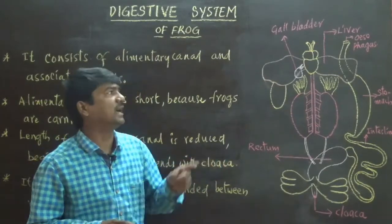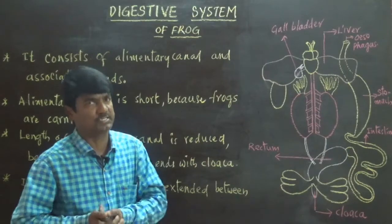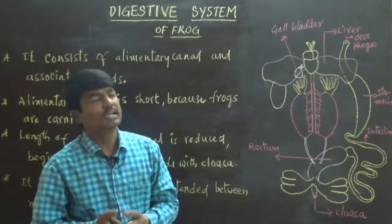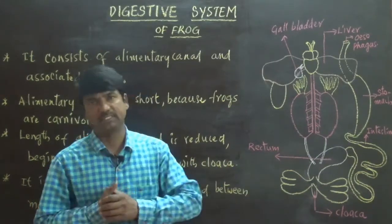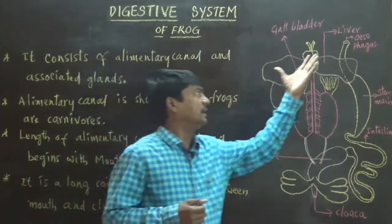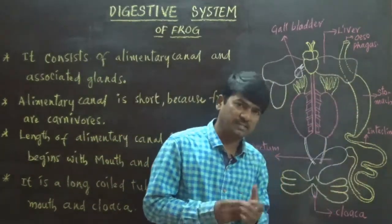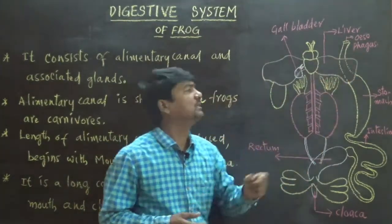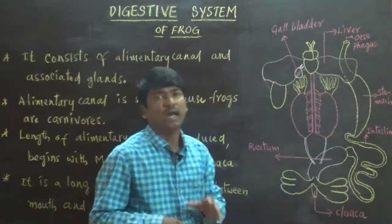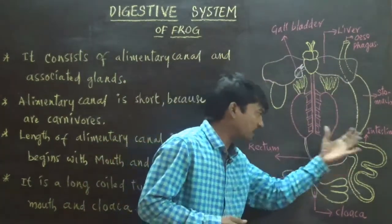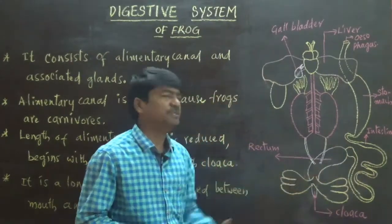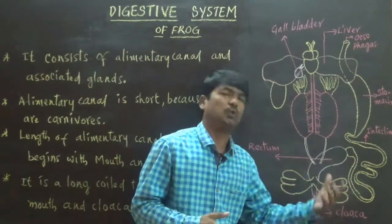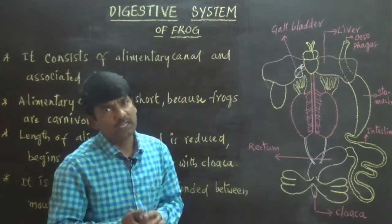The alimentary canal is composed of many structures. It begins with the mouth and ends with the cloacal aperture, with the cloaca present at the end. It begins with the mouth, which leads into the esophagus, then into the stomach, then into the intestine, which opens into the rectum. Large intestine is absent; rectum takes its place, and rectum finally leads into the cloaca, opening outside through the cloacal aperture.